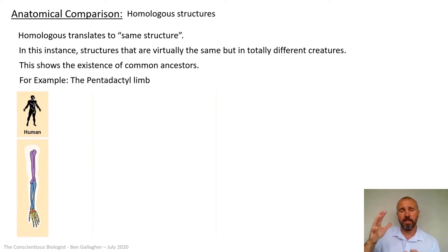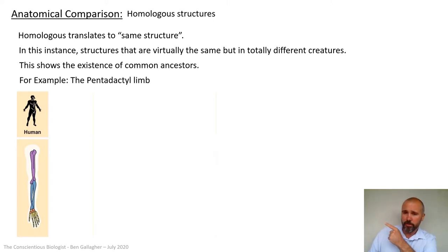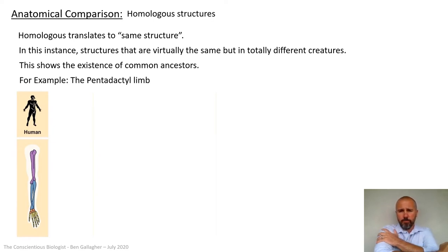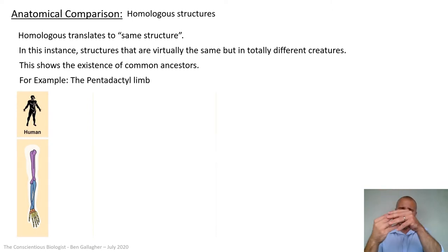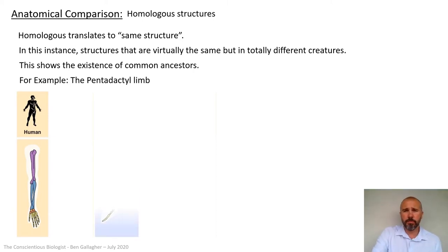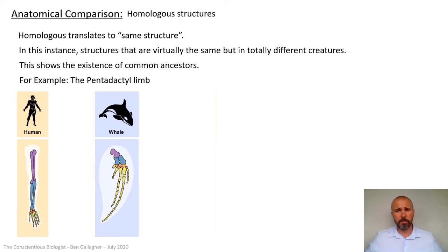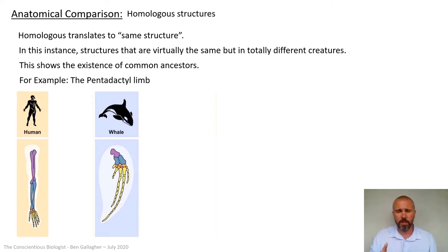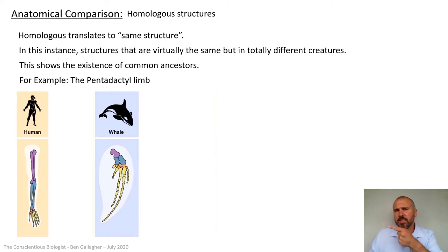Pentadactyl means five-fingered limb. For a human, looking at the diagram, you've got in purple at the top the humerus bone — the big upper arm bone — then the radius and ulna, then the metacarpals and carpals in the wrist and hand, and the phalange bones which are the fingers. All of those bones are observable in a whale's flipper. Inside a whale's flipper, if you dissected it, it's not like a solid shark fin — it's got those bones in. It's like a little arm inside the flipper.